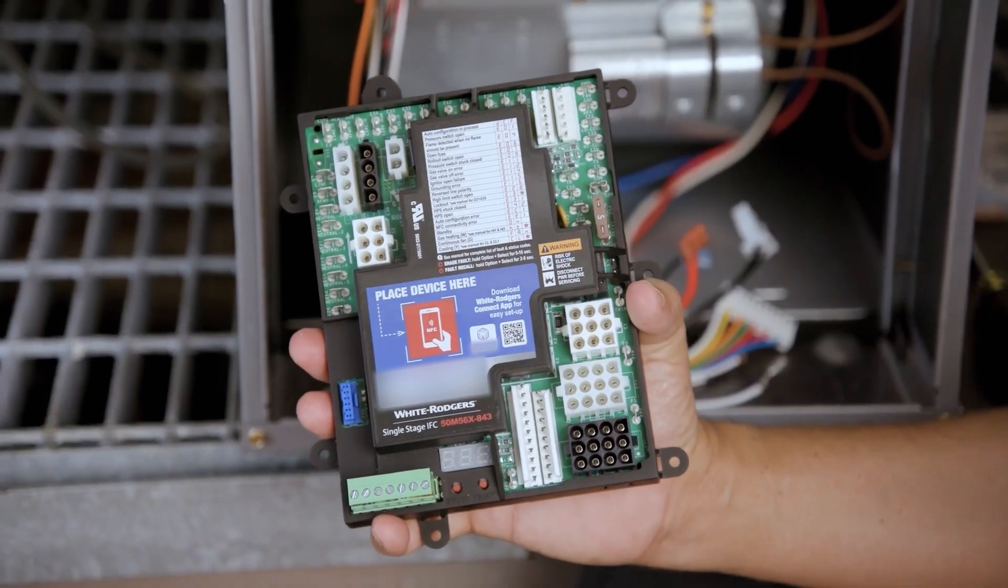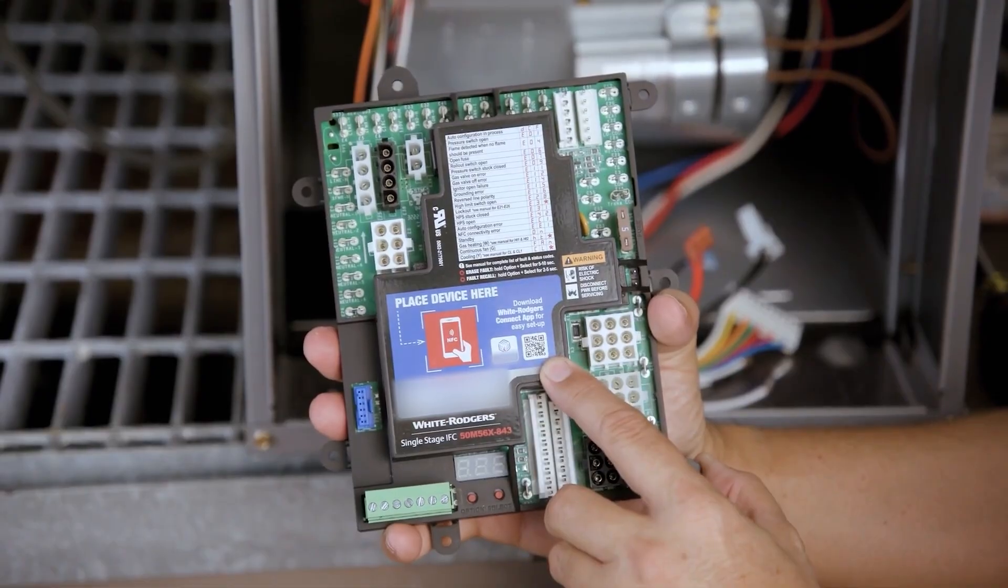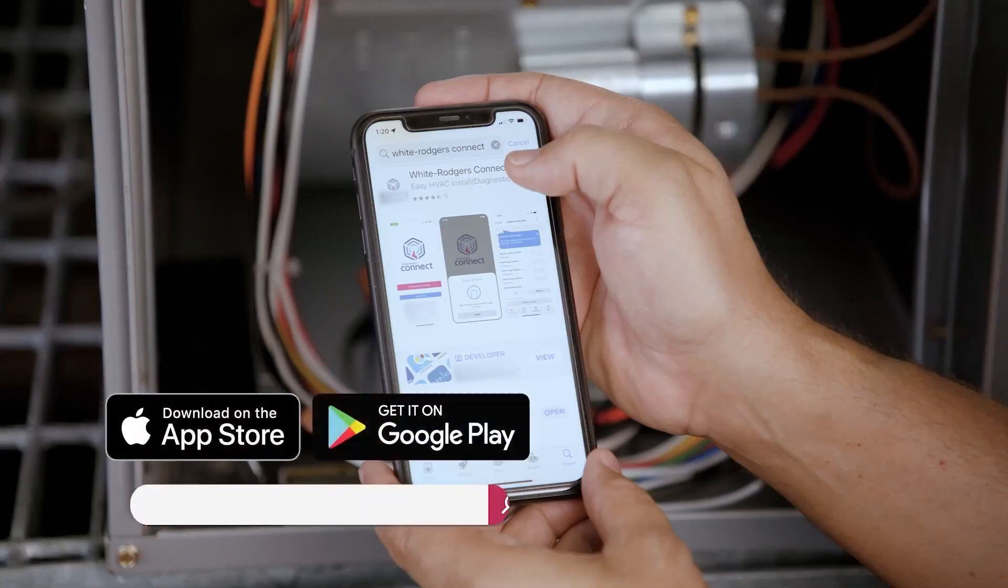The preferred method of configuration is through the White Rogers Connect app prior to installation. You can scan the QR code to download the app through the Apple Store or Google Play.